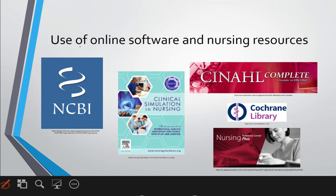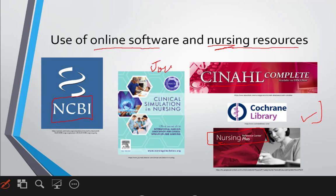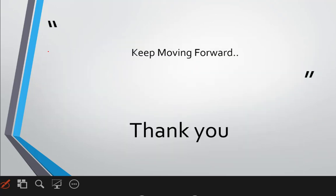The last thing to mention about the research part is how to use online software and nursing resources — the common ones being NCBI, CINAHL, Nursing Plus (requiring organizational membership), and the Cochrane Library. You need to understand how to use a journal properly, how to access it, and what exactly you need to know. These are the informatics-related things you need to understand in research to utilize it well. With this I end this lecture and hope we will talk about more practical aspects later on.